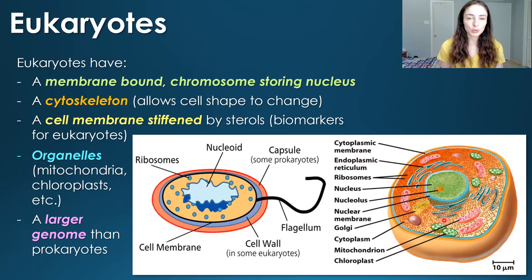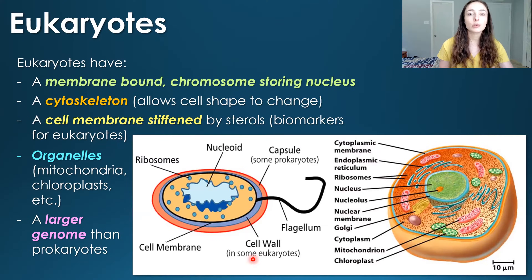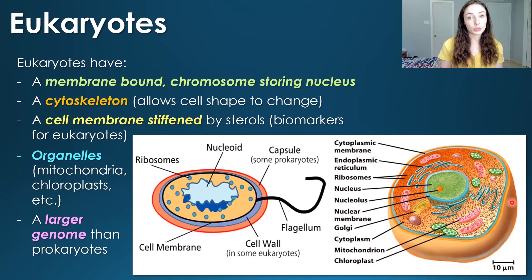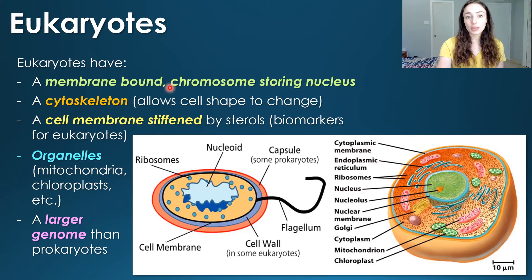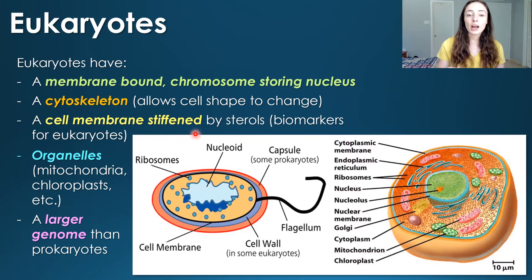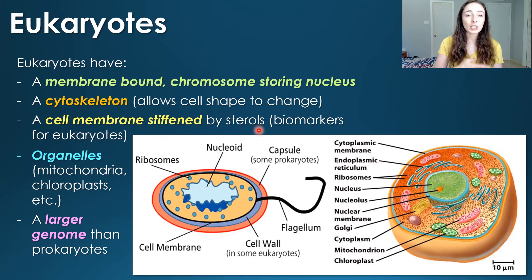In terms of differences between eukaryotes and prokaryotes: here in the center of the screen you can see an example of a prokaryotic cell — prokaryotes include things like bacteria and archaea — and on the right, an example of a eukaryotic cell. Eukaryotes have a membrane-bound nucleus that stores chromosomes, a cytoskeleton that allows them to change shape, and a stiffened cell membrane with molecules called sterols, which became important biomarkers in the rock record for when eukaryotes evolved, since prokaryotes don't have those in their cell membrane.